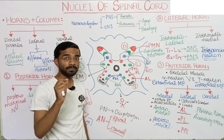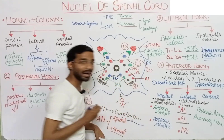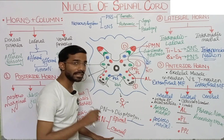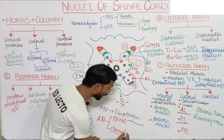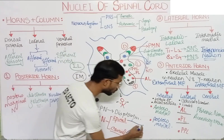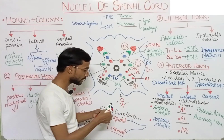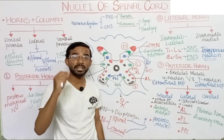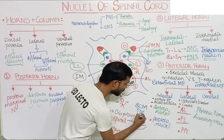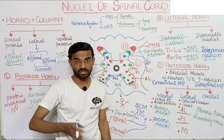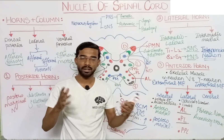The spinal root of the accessory nerve arises from the spinal region. The cranial root arises from the nucleus ambiguus, which is present at the medulla oblongata. These two nerves join together. The spinal root of the accessory nerve supplies two important muscles: the sternocleidomastoid muscle and the trapezius muscle. The cranial root supplies the larynx, pharynx, and the palate of the mouth.